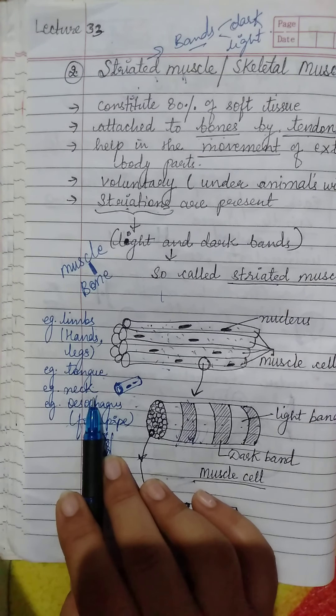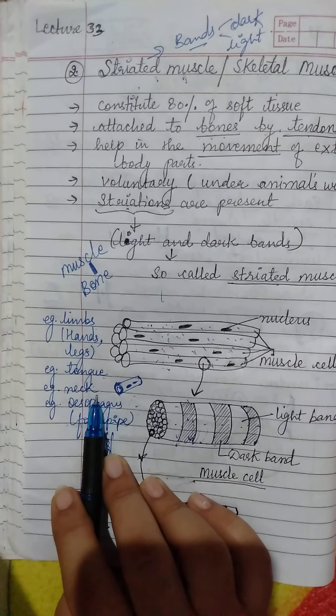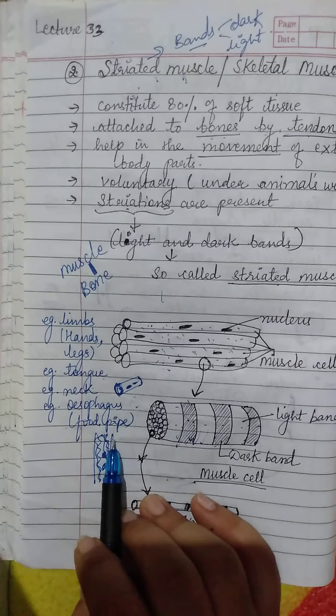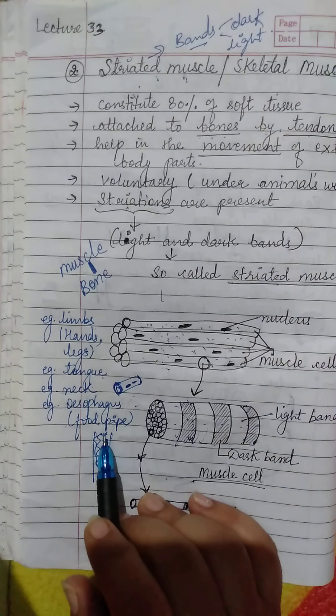And in the neck, you can turn your neck around because of the muscles present in the neck. So this is all about the examples of skeletal muscle.